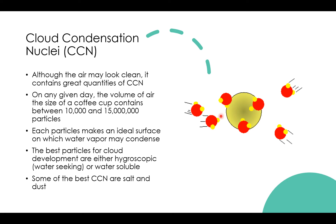Although the air may look clean to us, it contains great quantities of cloud condensation nuclei — that smoke, that salt from waves over the ocean. On any given day, the volume of air the size of just a coffee cup contains between 10,000 and 15 million particles. We can't really see those with our naked eye, but they're in the atmosphere. Each particle makes an ideal surface on which water vapor may condense. The best particles for cloud development are either hygroscopic — meaning water-seeking — or water-soluble. Some of the best CCN are salt and dust.